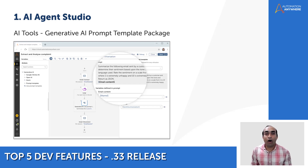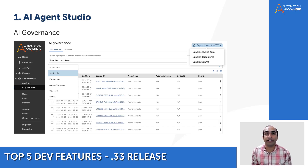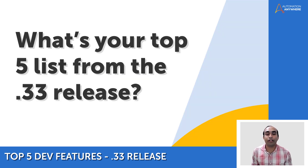With AI Governance, you can ensure only approved models are used to meet your compliance and regulatory standards. It keeps a watchful eye on all data going back and forth with robust monitoring and auditing during automation execution. That concludes our overview of the top five features in the .33 release.